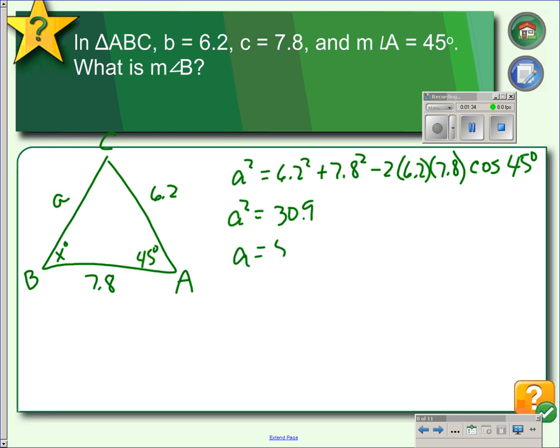Taking the square root, we find that a is 5.6, making it the smallest angle. Now that we have all three sides of our triangle, we could use the Law of Cosines to find angle B, or we could use the Law of Sines, which is actually easier.